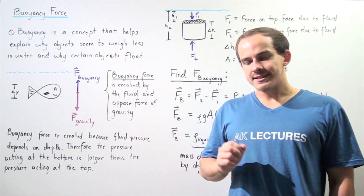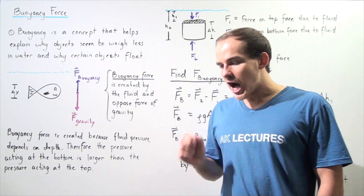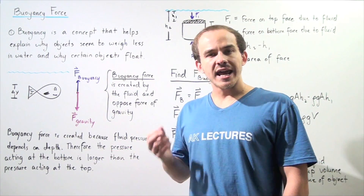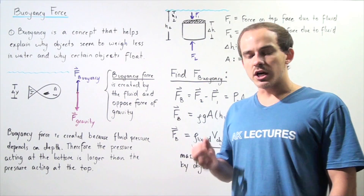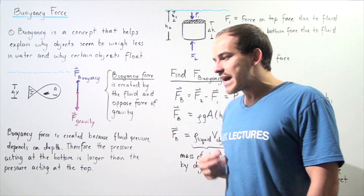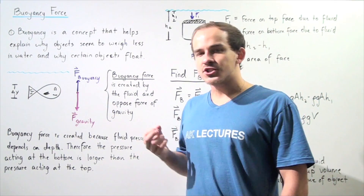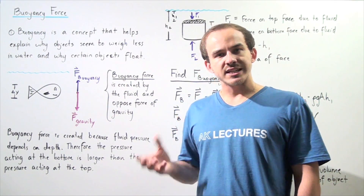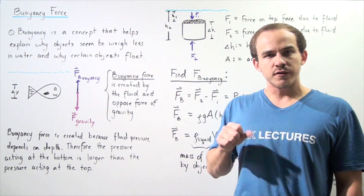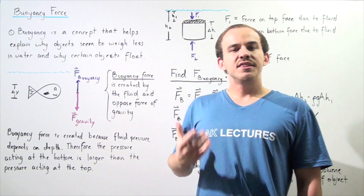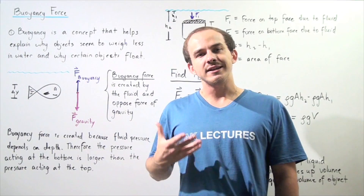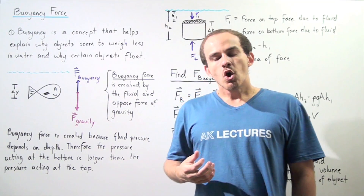So why exactly is it that certain objects, such as wood, are able to float on water? And why is it that when you take a certain object and place that object into the fluid, that object seems to weigh less?